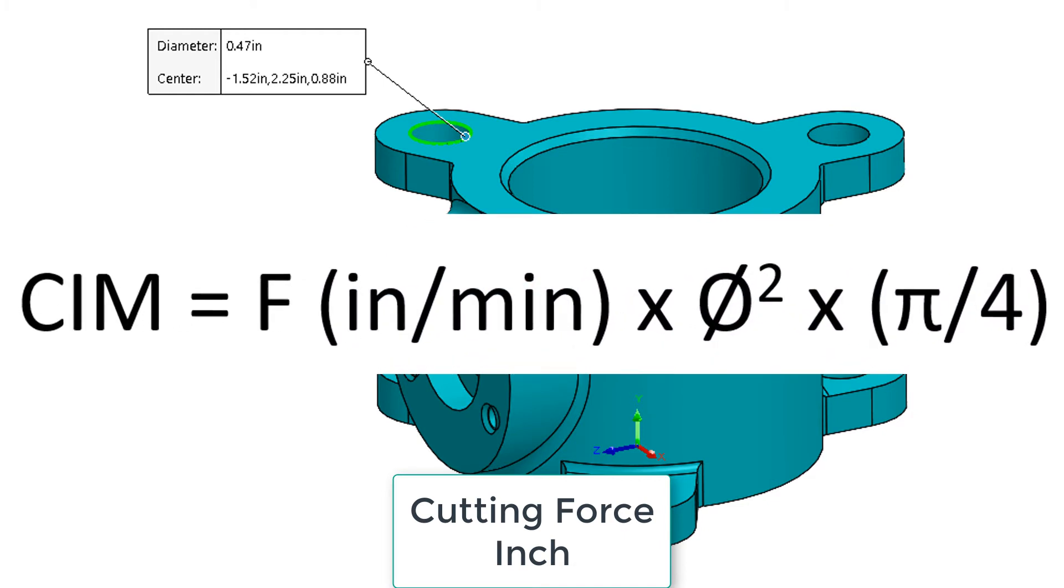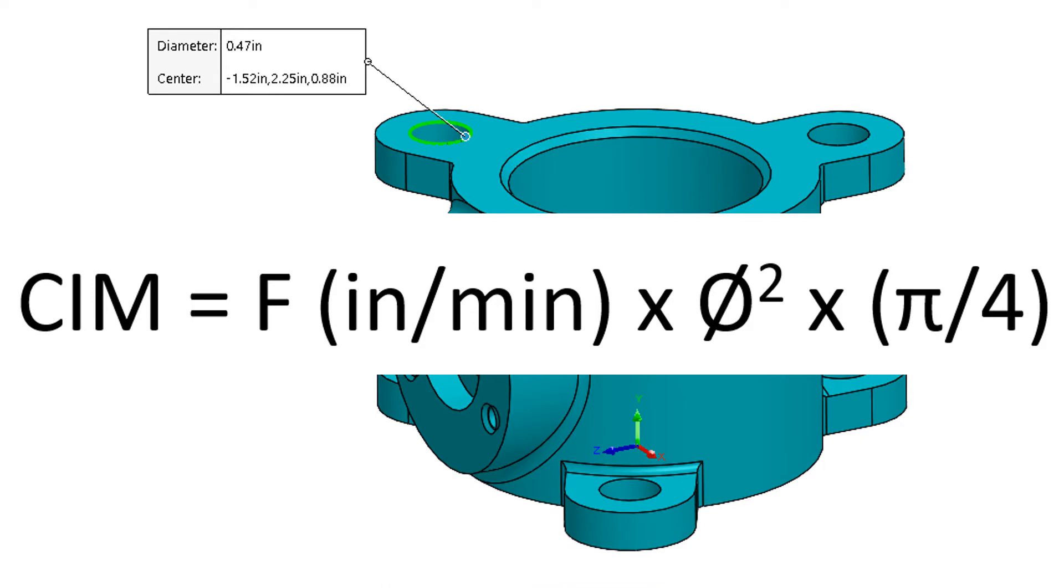If I need to calculate the cutting force to drill this 0.47 diameter hole in my valve body which is cast iron, my first step is to calculate the cubic inches of material removed per minute. To do this I need to calculate the feed rate, and to calculate the feed rate I first need to calculate the RPM.